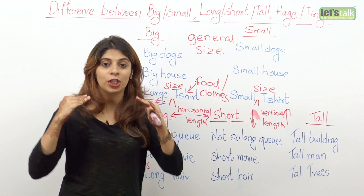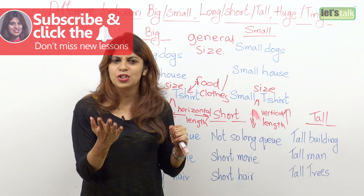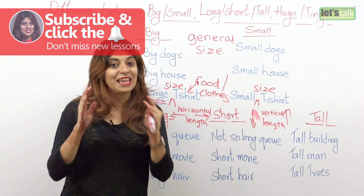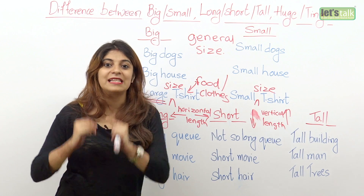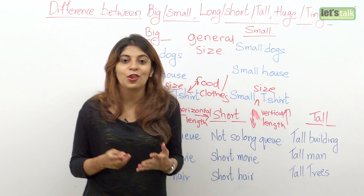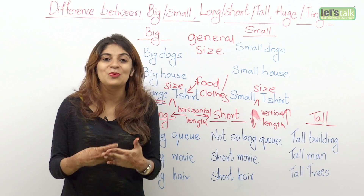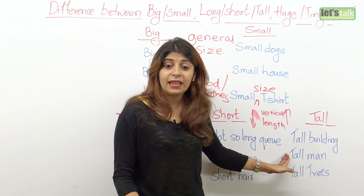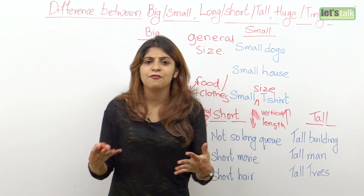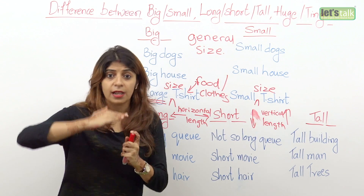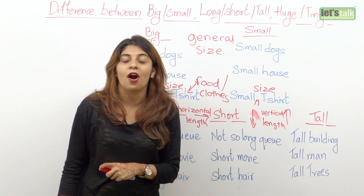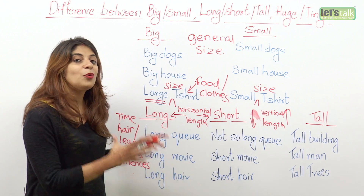Now let's move on to the word tall. We use tall when talking about vertical length — someone's height. That person is so tall. You will not say that person is so big or so long; the correct adjective for height is tall. She's so tall but he's so short. A tall building — New York is full of tall buildings. A tall man. And tall trees: that forest is full of tall trees. You wouldn't say long trees; the correct word is tall trees.